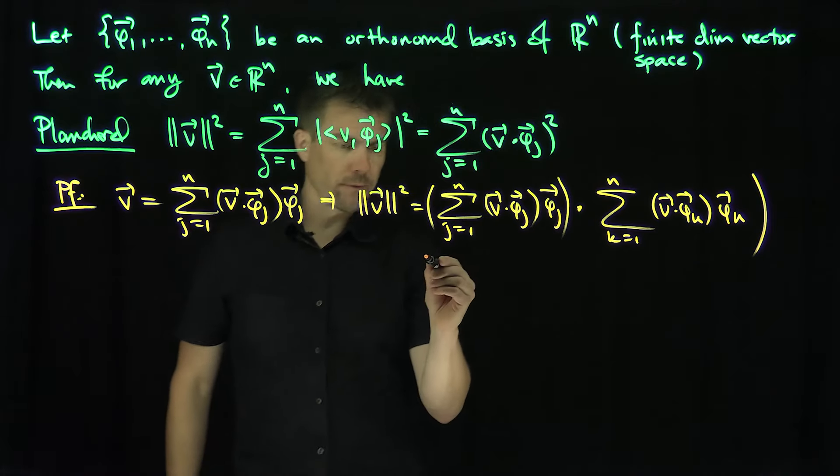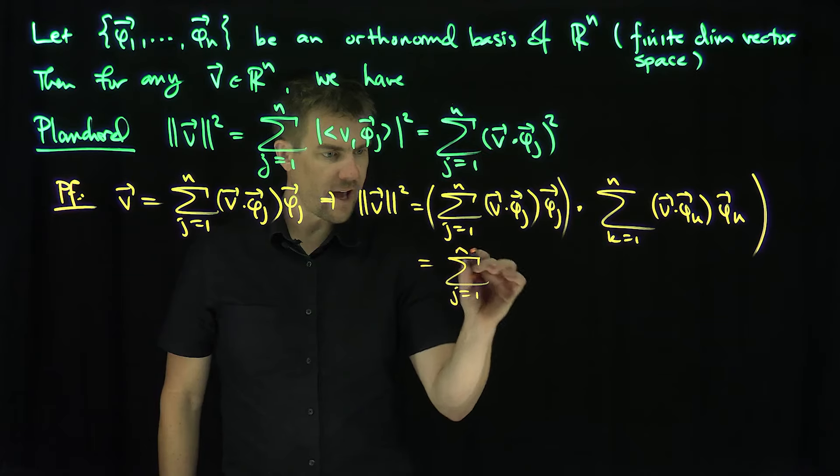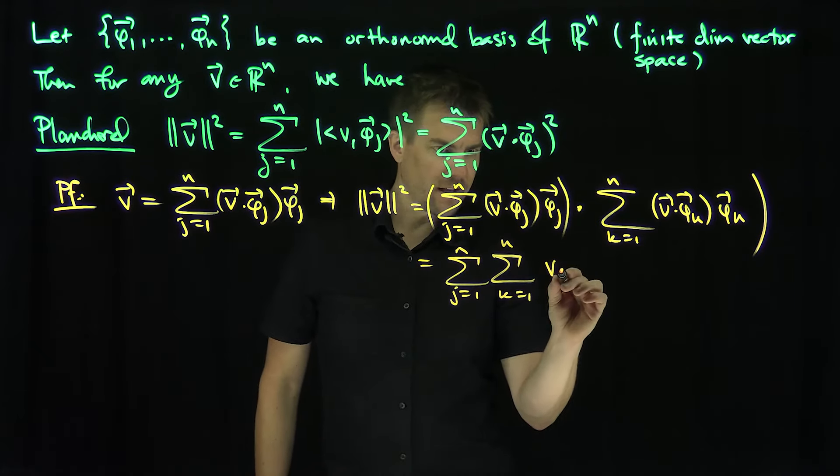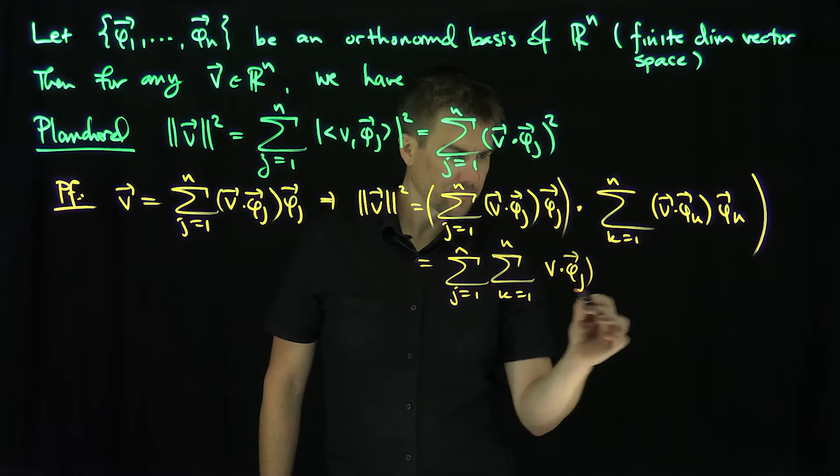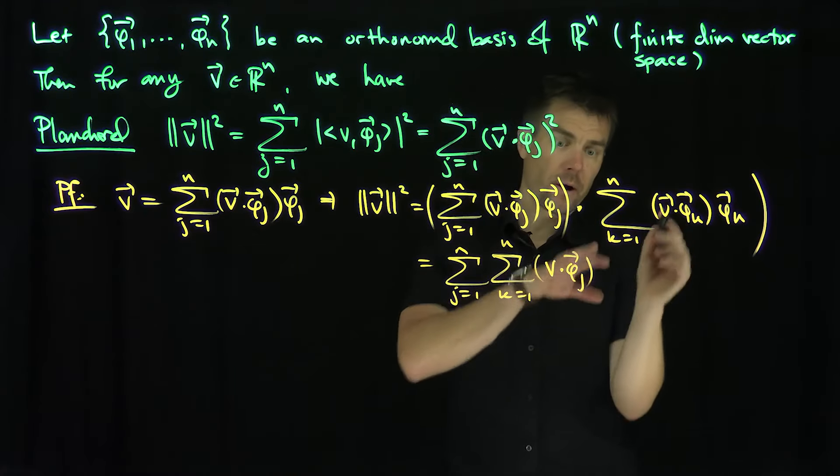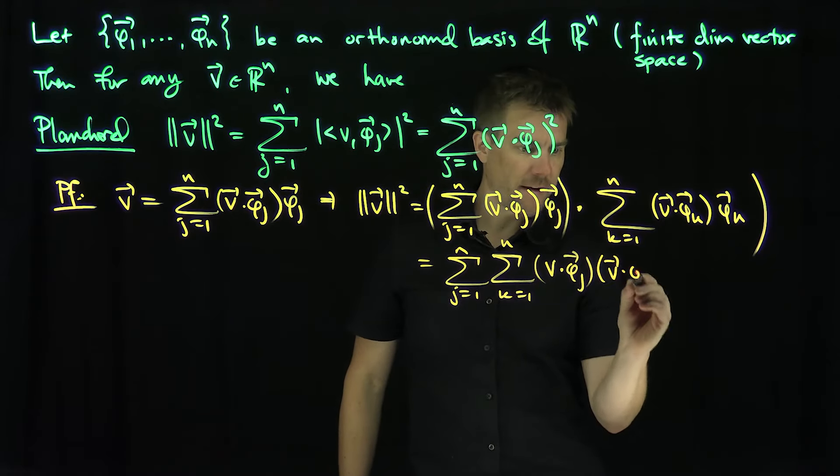So formally, what will this be? Formally, this is the sum j goes from 1 up to n, sum k goes from 1 to n of v dot phi_j times v dot phi_k.